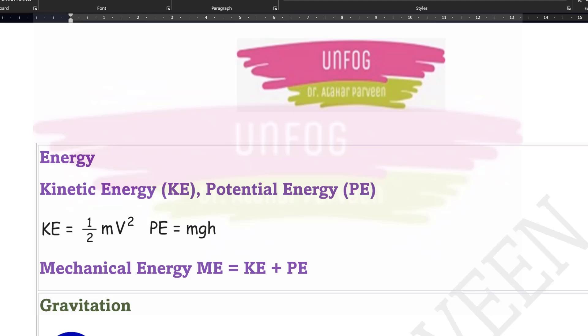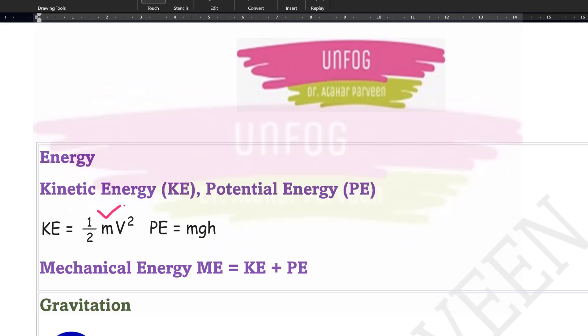The first formula is related to energy. It is a very common formula and that is of kinetic energy and potential energy. We know that kinetic energy is equal to half mv square and potential energy is equal to mgh. But if they are talking about mechanical energy, it is sum of kinetic energy and potential energy.